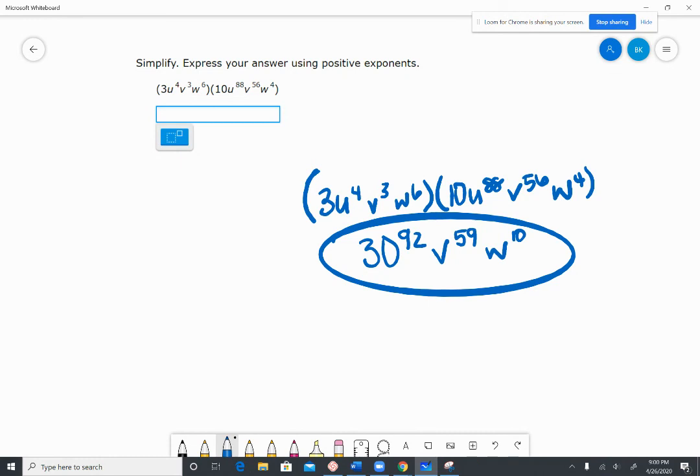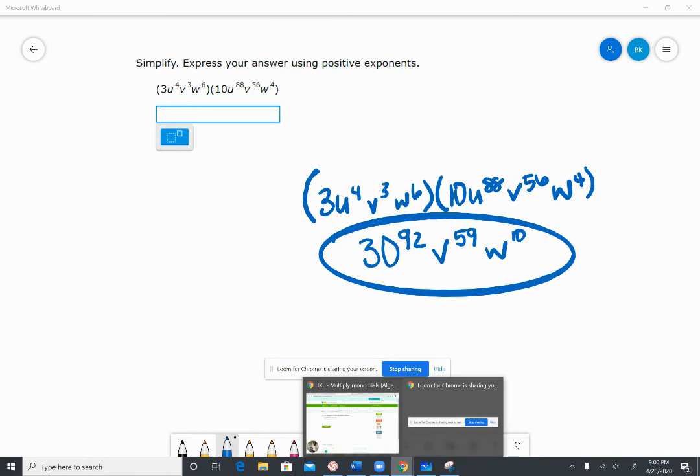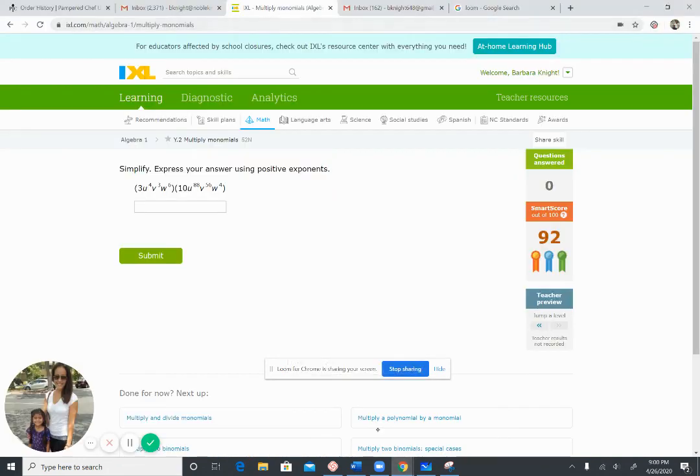So those are the three types of examples that you would see on 52N. Let's go back here. And as always, if you have any issues, please chat me.